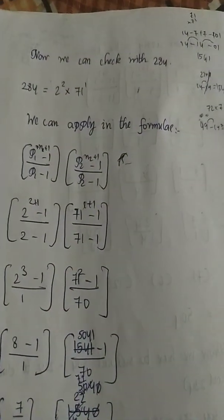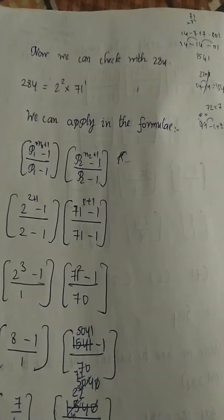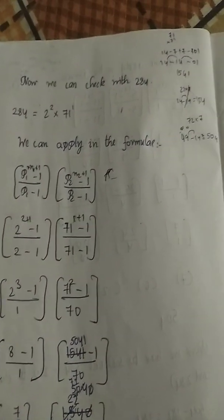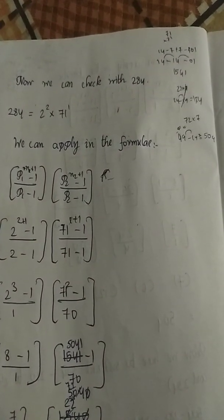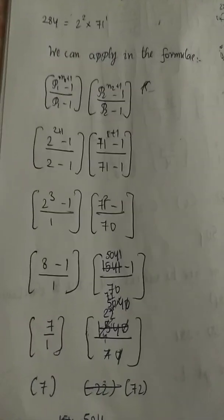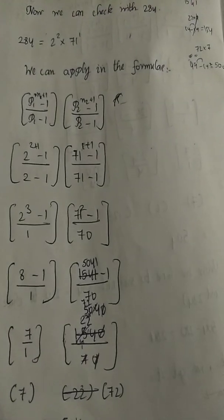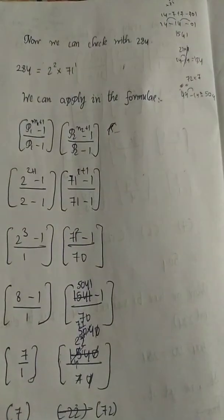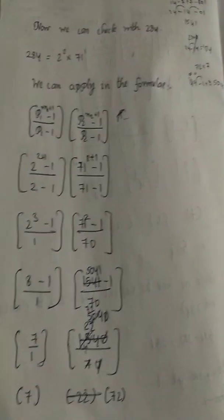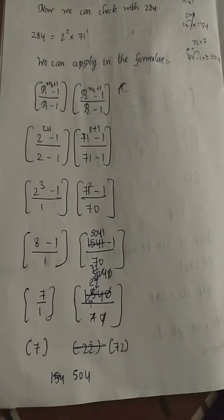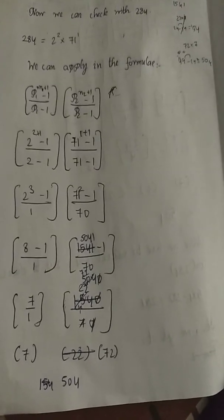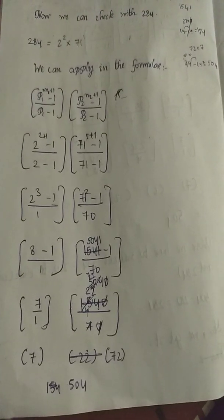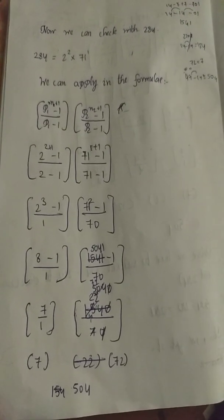Now we take 284. We know 284 = 2 power 2 into 71 power 1. Applying the formula: (2^(2+1) - 1) / (2 - 1) into (71^(1+1) - 1) / (71 - 1), which gives (2^3 - 1)/1 into (71^2 - 1)/70.